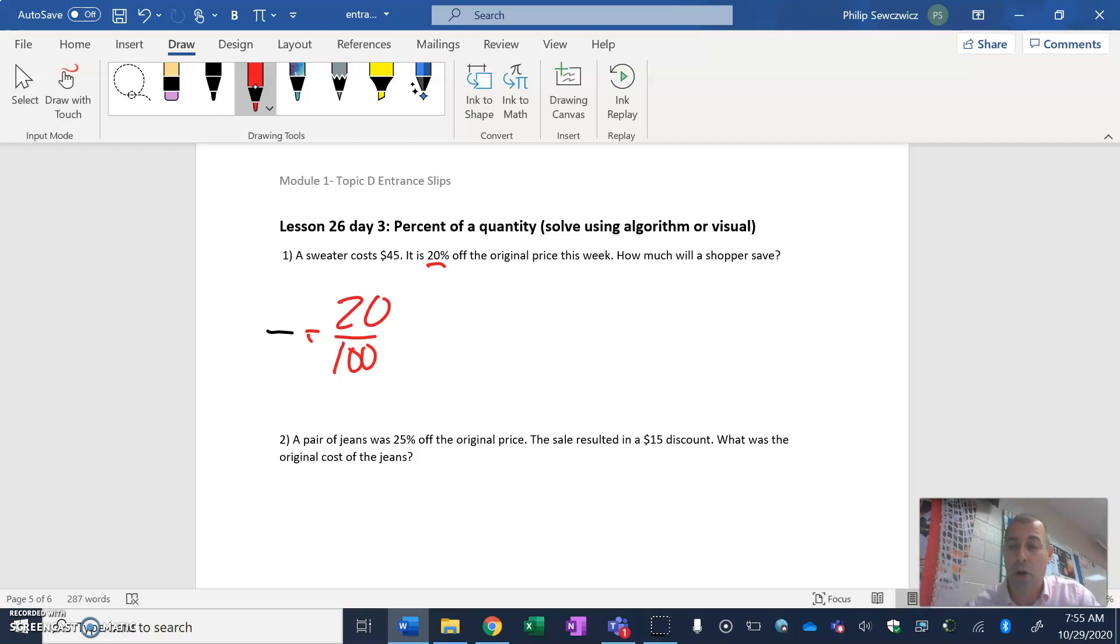Now remember, the part is going on. We've got part over whole. It's always the part on top, it's always the whole on the bottom. In this particular case, a sweater costs $45. That's the whole price, that is the total price that you are dealing with.